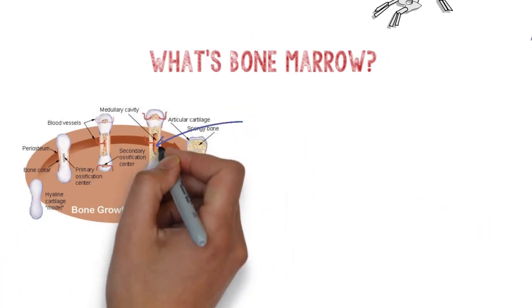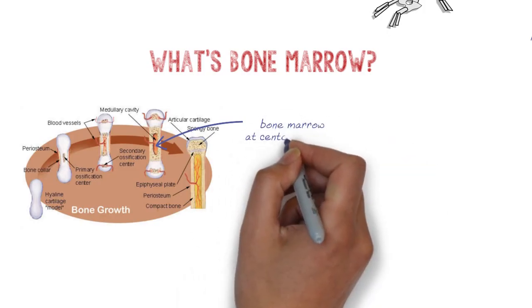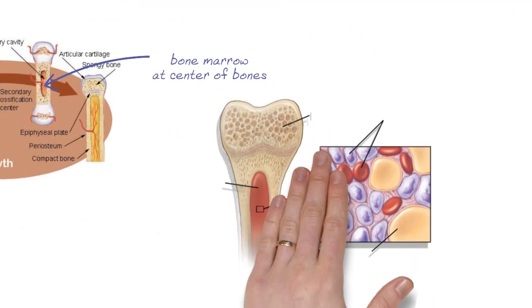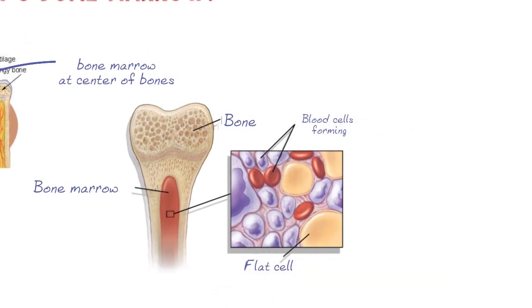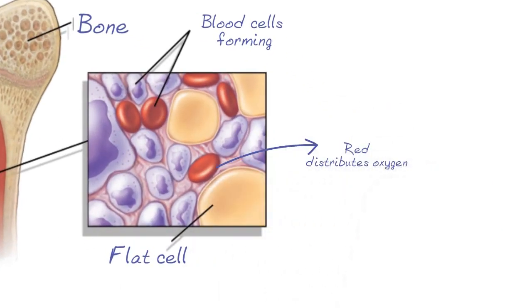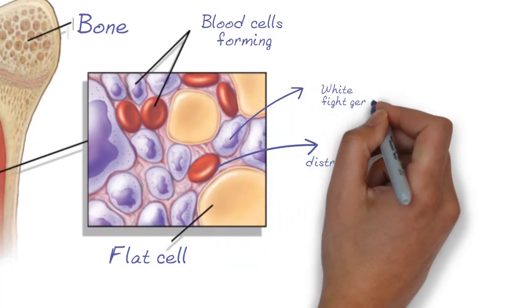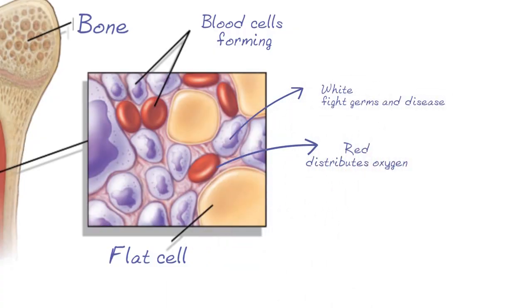Many bones are hollow. Their hollowness makes bones strong and light. It's in the center of many bones that bone marrow makes new red and white blood cells. Red blood cells ensure that oxygen is distributed to all parts of your body, and white blood cells ensure you are able to fight germs and disease. Who would have thought that bones make blood?